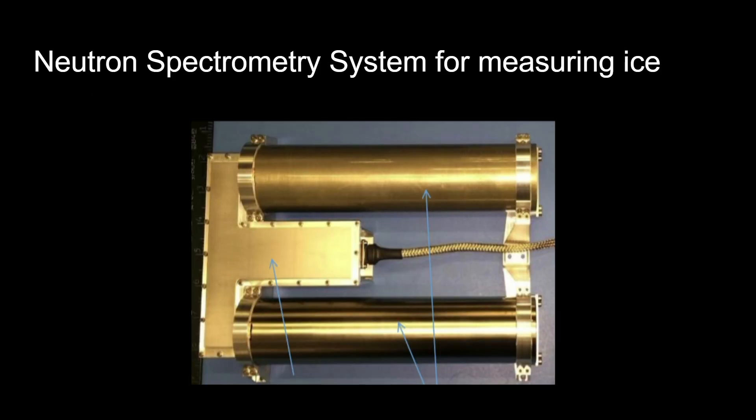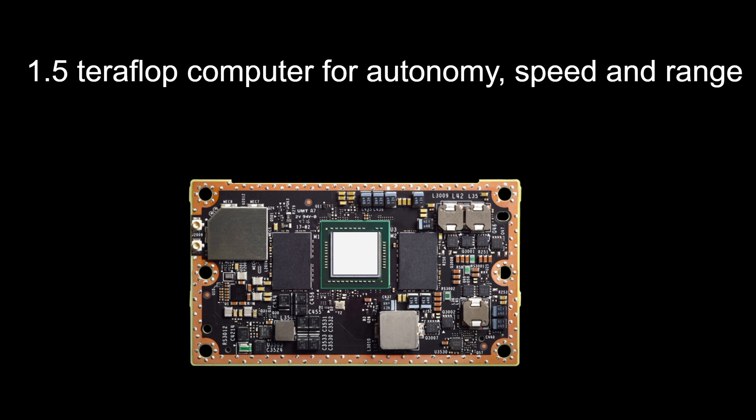A neutron spectrometry system continuously measures ice concentration while the rover drives. The robot's high-performance computer enables the fast vision, quality navigation, and autonomy that achieve the leap of speed, range, and accuracy.